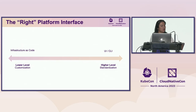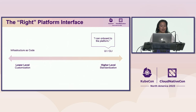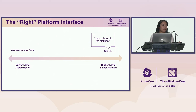In years past, we've used the UI or CLI approach just to make it better. This could be the form of a service catalog, or any UI or CLI, and the idea is that you can onboard your developers to the platform. This comes at a price, though. The higher level your interface, the more standardization you get, but you don't get the customization. So if you have certain use cases that can't use a UI or CLI or have some specific needs, you still have to learn some infrastructure as code.